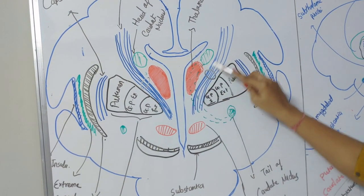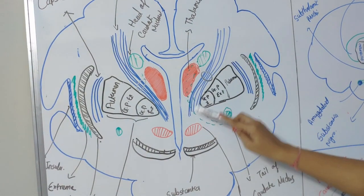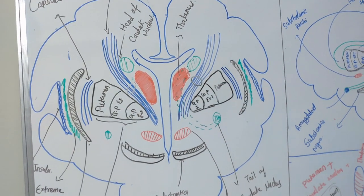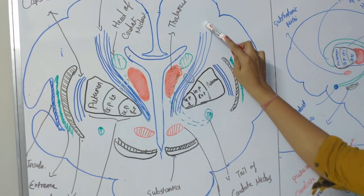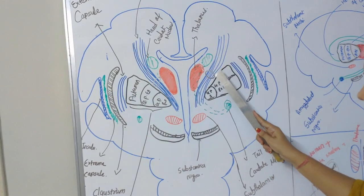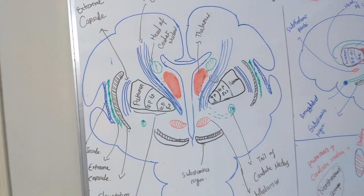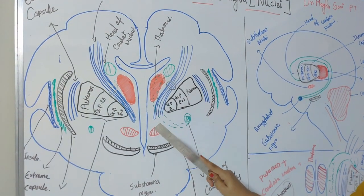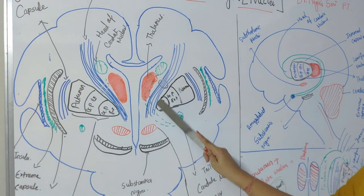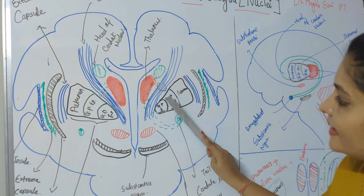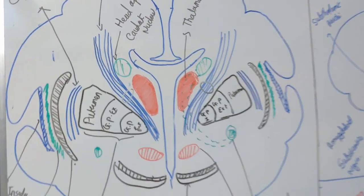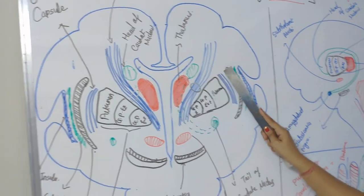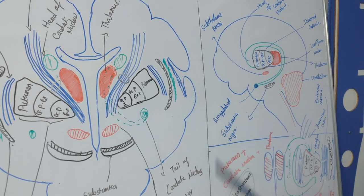Just lateral to Caudate Nucleus are bundles of axonal fiber — the Internal Capsule (Chatur) — consisting of descending and ascending fibers, including the corticospinal tract. Lateral to Internal Capsule is a lens-shaped structure — the Lentiform Nucleus, which looks like a piece of cheese. Lentiform Nucleus is divided into two parts: the lateral outer part is Putamen, and the inner part is Globus Pallidus, which is again divided into Globus Pallidus Externa and Globus Pallidus Interna.